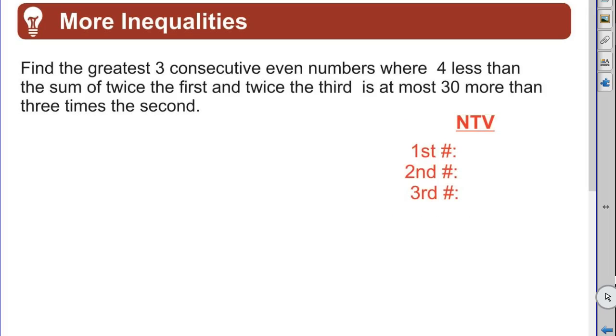All right, find the greatest three consecutive even numbers where four less than the sum of twice the first and twice the third is at most 30 more than three times the second. All right, sounds insurmountable but it's not. Let's start with NTV. Let's name our variables. You get the first number, second, and third.